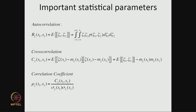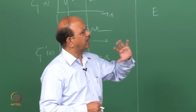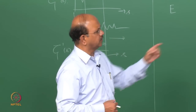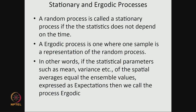We define what is called the correlation coefficient, which normalizes the autocovariance by the variance. This gives us a normalized measure of the connection between measurements. The autocorrelation and autocovariance are given by their respective equations, and the correlation coefficient is obtained by dividing by the variance.